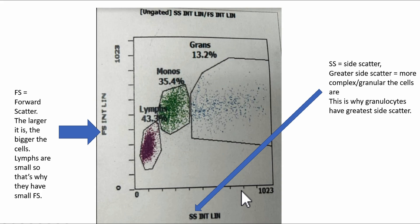Side scatter determines the complexity or how many granules the cells have. So the more complex the cells, the greater the side scatter. And this is why granulocytes have high side scatter.